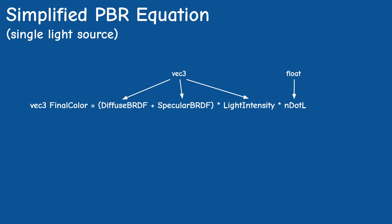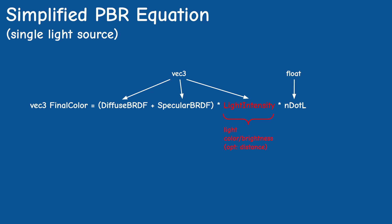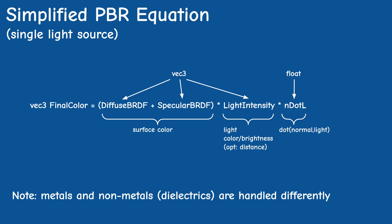We have three main components here. The combination of diffuse and specular in the parentheses is the color of the surface. The light intensity combines the color of the incoming light, its brightness level, and also takes into account the distance in the case of point or spot lights. The final element is the familiar dot product between the normal vector and the light direction vector, which we've been using for diffuse lighting. Before we go further, I'd like to mention that the PBR model makes a clear distinction between metals and non-metal surfaces, which are called dielectrics. You will later see how this distinction is handled in the model.